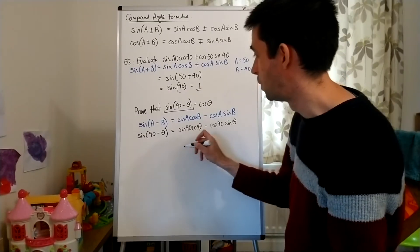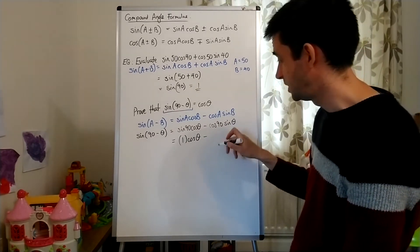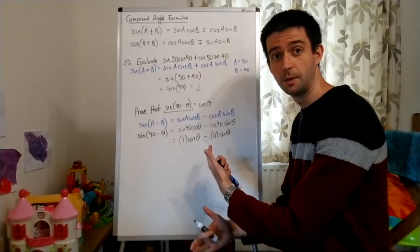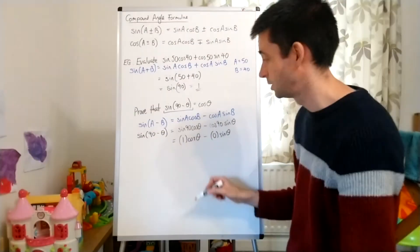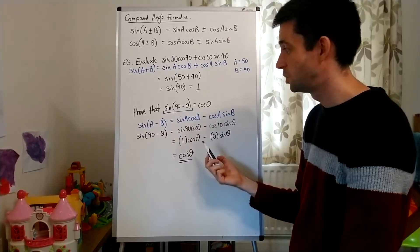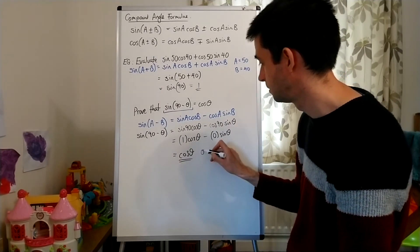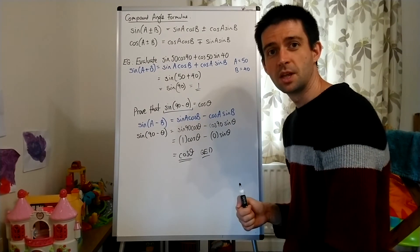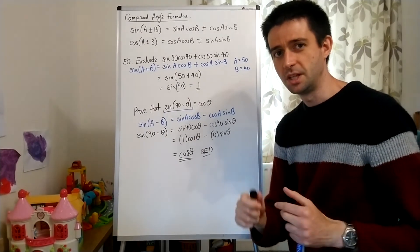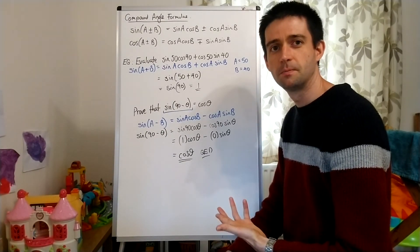Now, let's think about values. Sine of 90 is 1. So here we have 1 times by cos theta. And cos of 90 is 0. So we have 0 sine theta. Multiplying by 0, we're going to be left with nothing. So what we have is 1 times by cos theta, which is cos theta. So we've proved, using a compound angle formula, that sine of 90 minus theta equals cos theta. So we can write QED. Because that was quite easily done. If you just take a moment to think about the graph of sine theta and the graph of cos theta, you may be able to work out, actually, why this makes perfect sense if you think about transformations. But I'll leave that one with you.